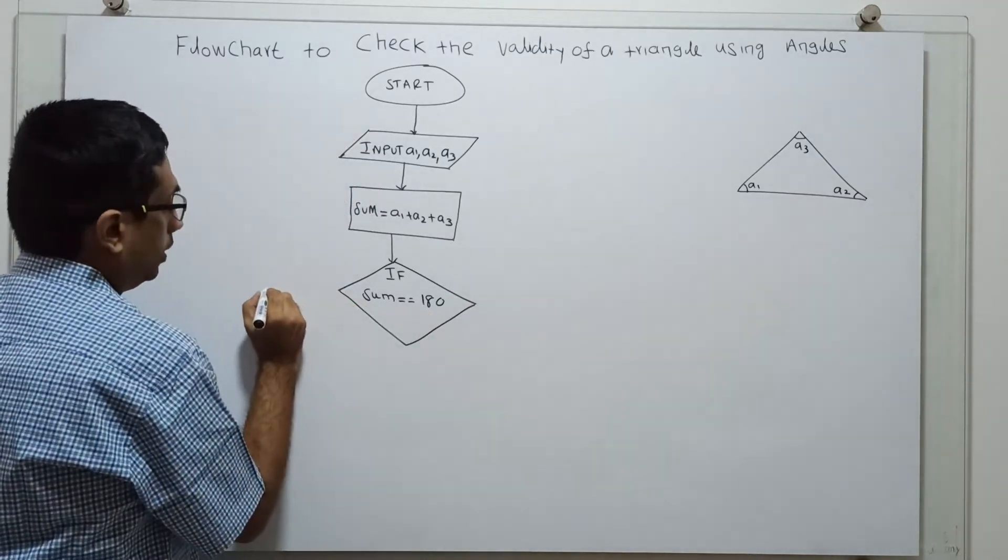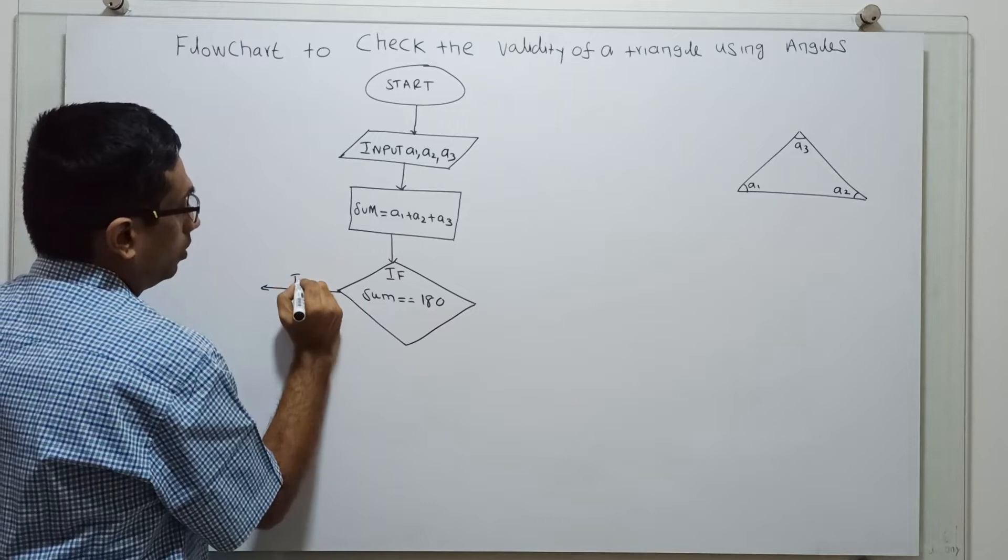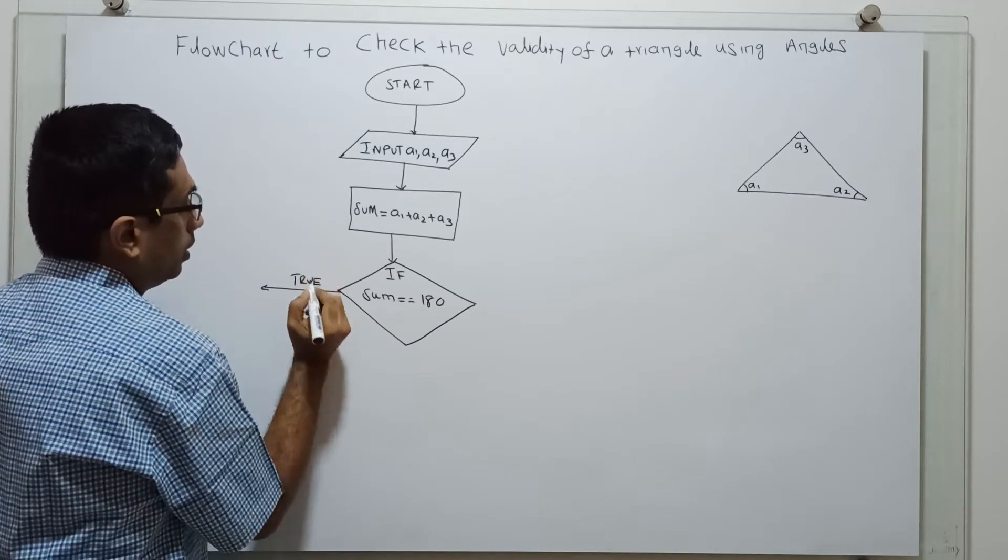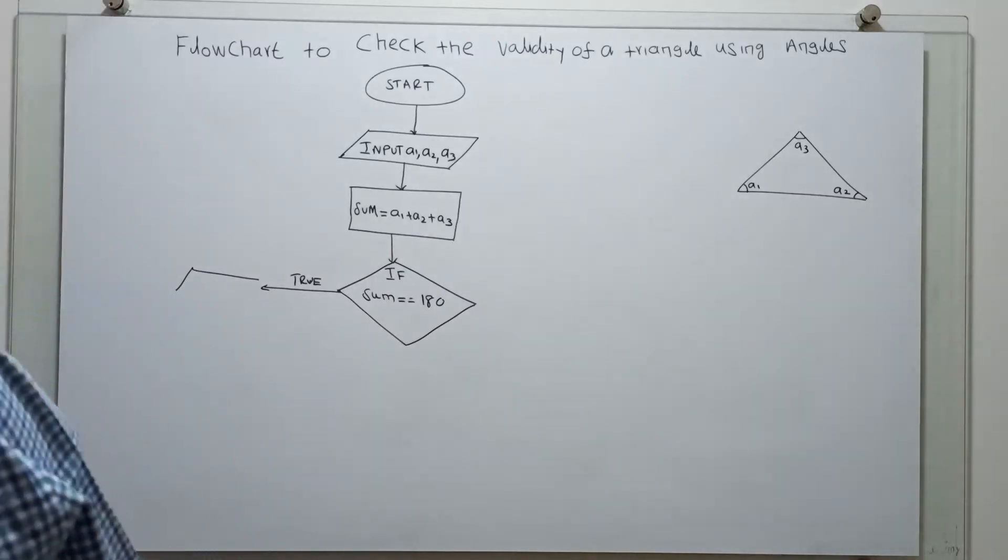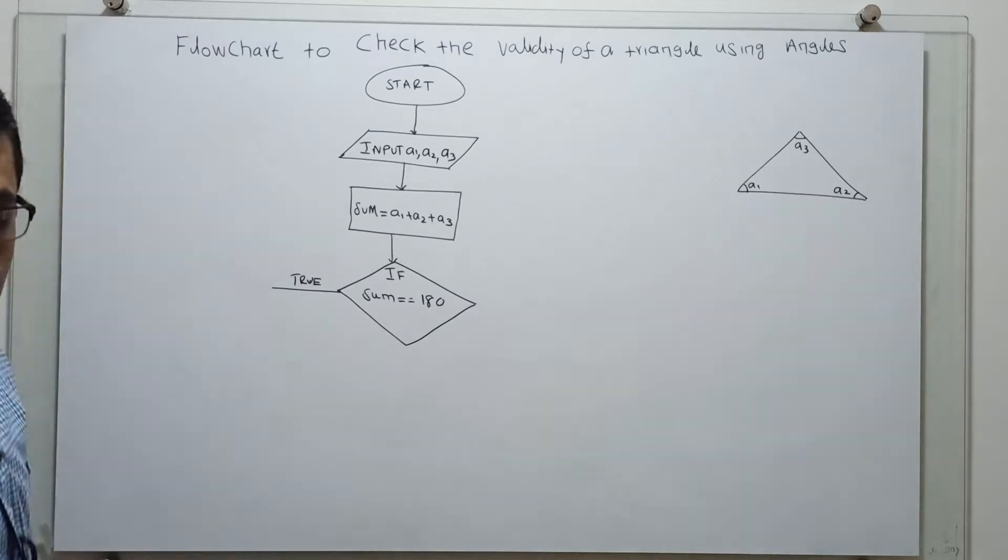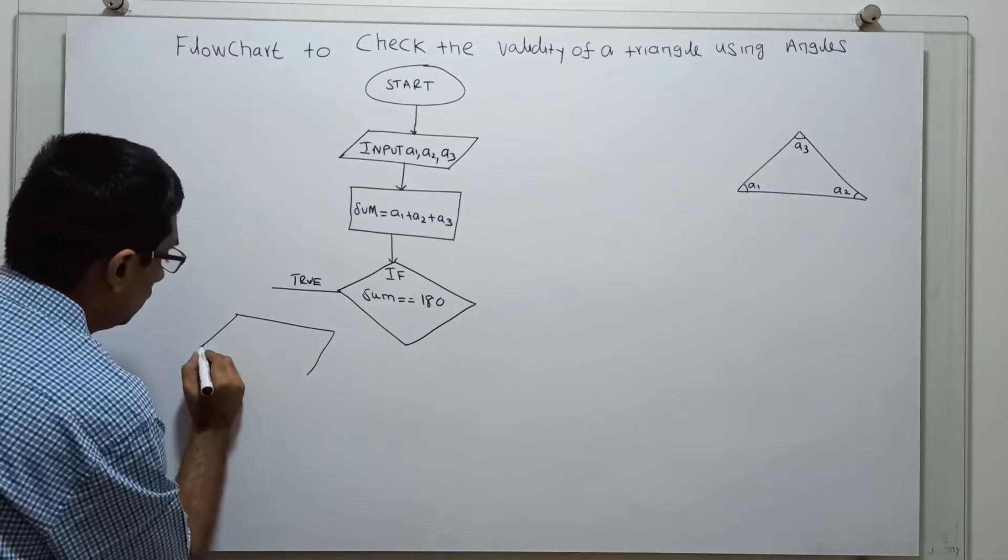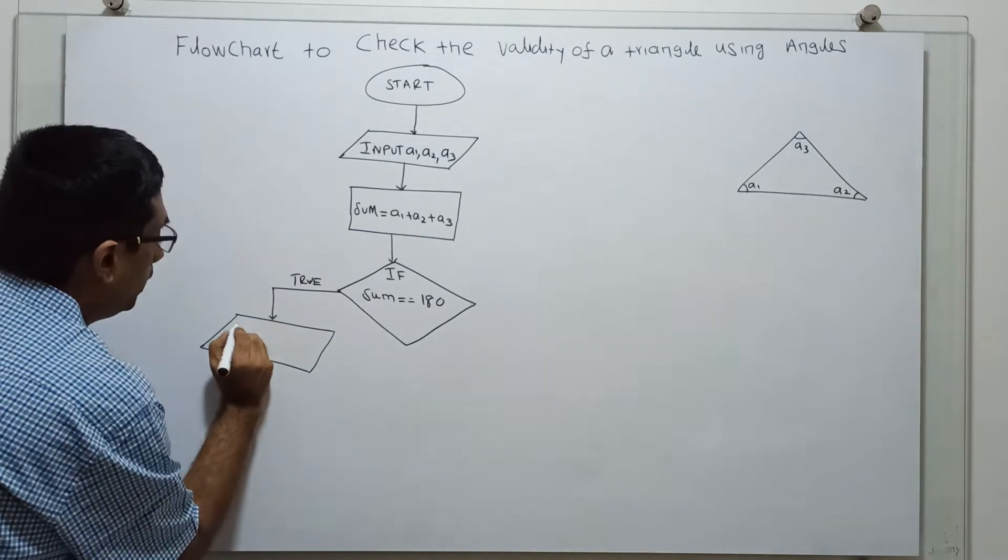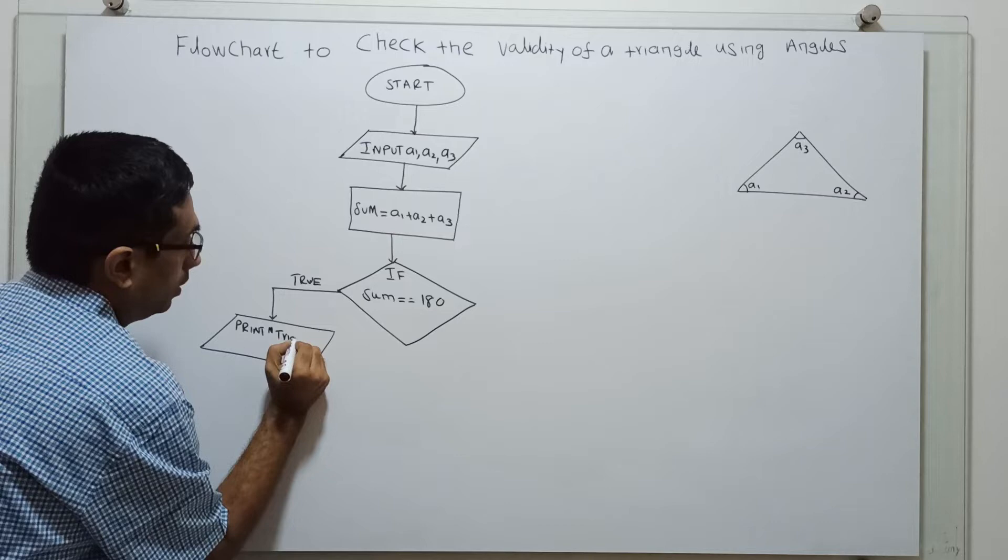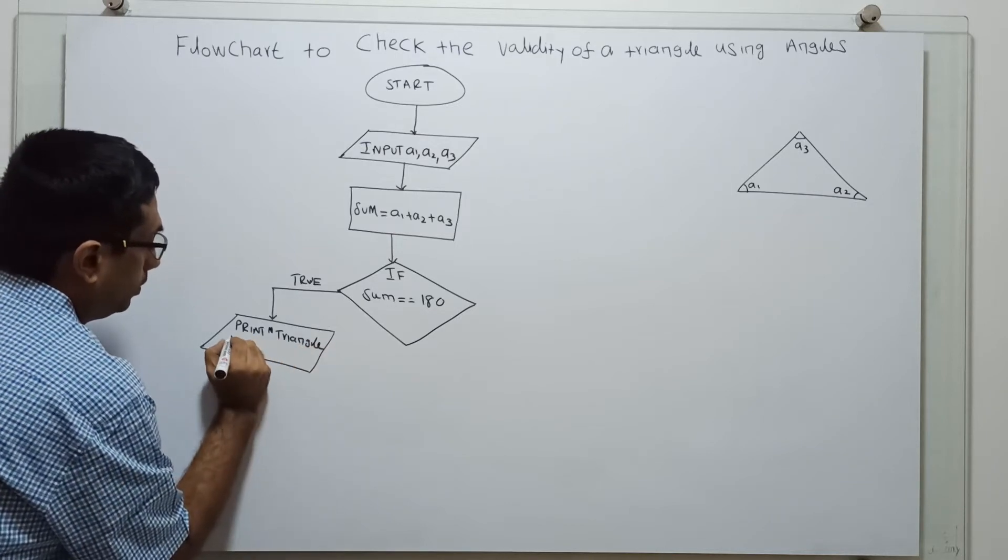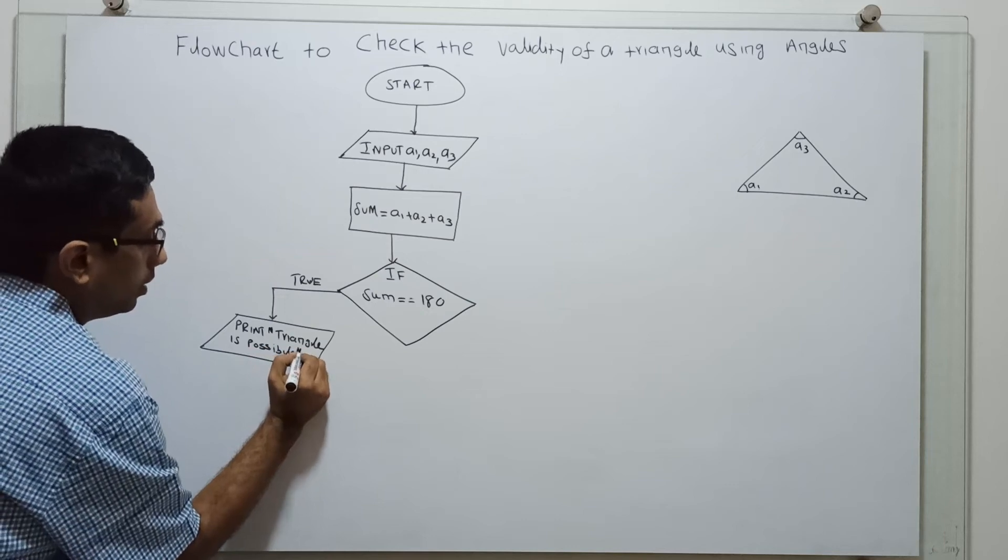If it is yes, it means true. I am printing triangle is possible. That means the given three angles form a triangle.